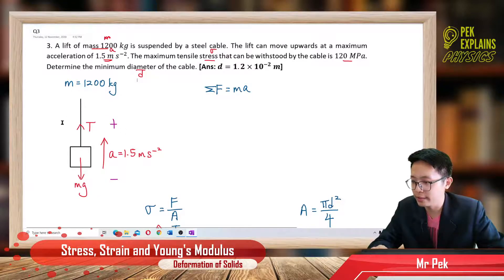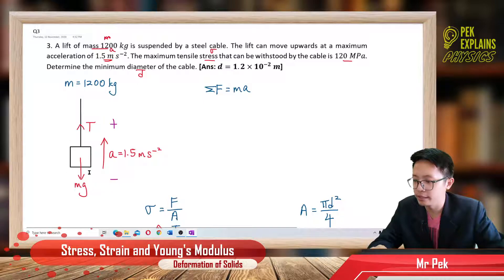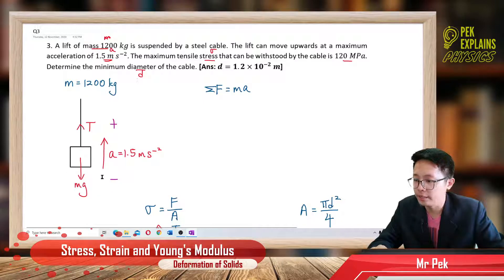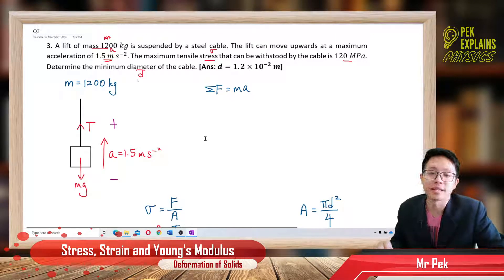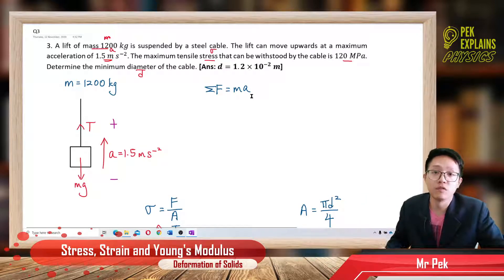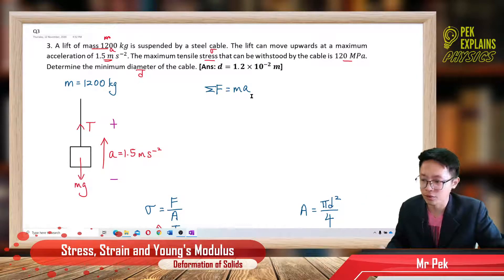First of all, this is the system: a steel cable pulling on the leaf — this is the leaf — and this leaf is accelerating upward with 1.5 meters per second squared. So it goes back to Newton's second law: total force equals MA. We go back to chapter forces, Newton's second law.